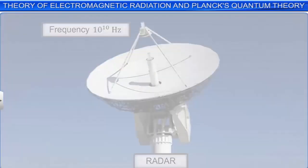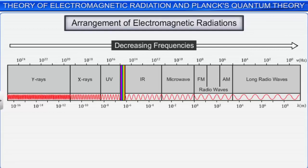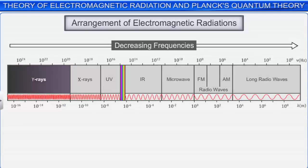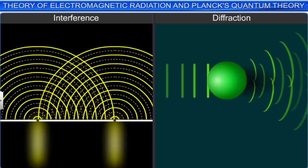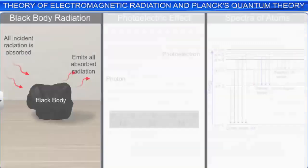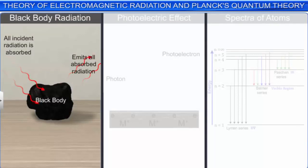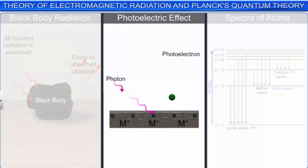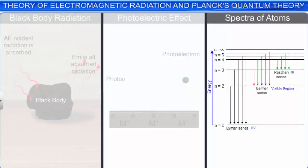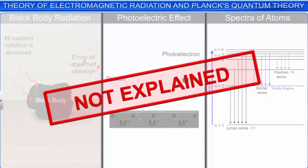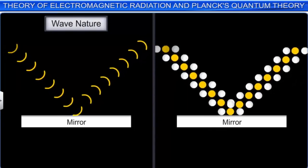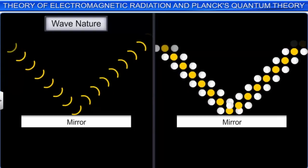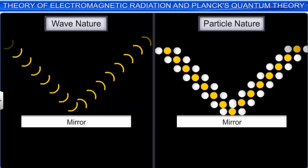Two other kinds of electromagnetic waves are X-rays and gamma rays. The wave nature of electromagnetic radiation successfully explains the phenomena of interference and diffraction. But the phenomena of black body radiation, photoelectric effect, and the spectra of atoms were not explained. These could be explained only if radiation is assumed to be a stream of photons — i.e., by considering the particle nature of radiation.